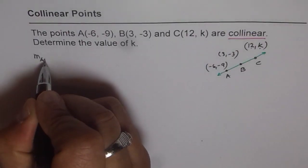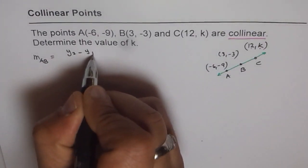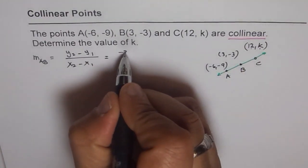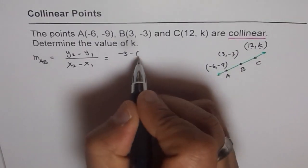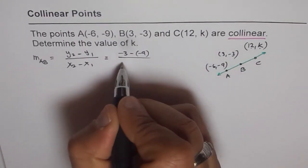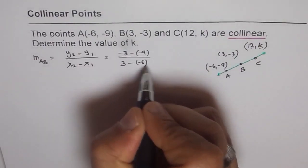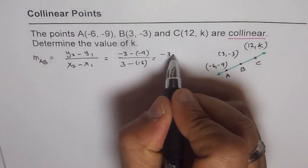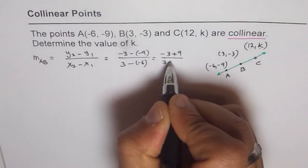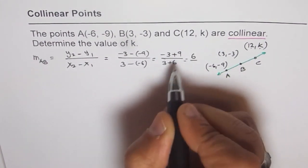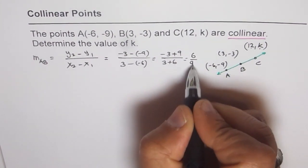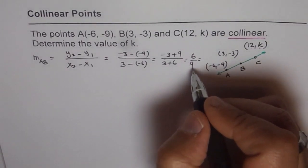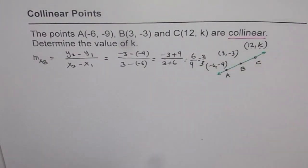First step is find slope between A and B, which is Y2 minus Y1 divided by X2 minus X1. In this case, Y2 is -3 minus Y1 which is -9. It's good to use these brackets. Now let's open these brackets and solve. So -3 + 9 over 3 + 6, that gives us 6 over 9. Dividing both by 3 to get 2 over 3. So M is 2/3.